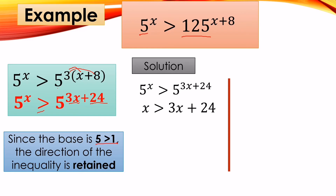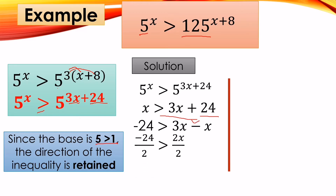We equate the exponents. There are two methods. First method: move positive 24 to the other side (it becomes −24), bringing down 3x, so we get: −24 > 3x − x, which simplifies to −24 > 2x. Divide both sides by 2: −12 > x.